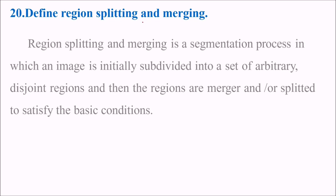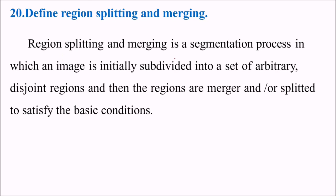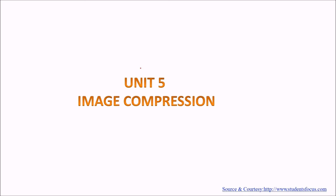Define region splitting and merging. Region splitting and merging is a segmentation process in which an image is initially subdivided into a set of arbitrary and disjoint regions. And then the regions are merged or splitted with certain predefined conditions to satisfy the conditions which we have adopted. So this was about segmentation. We will take a bit of compression in the next session. Thank you so much.